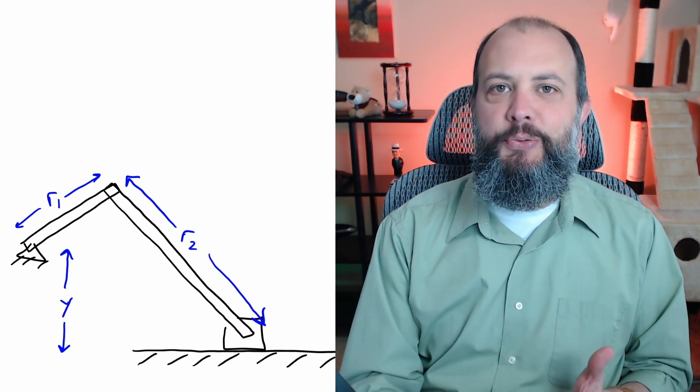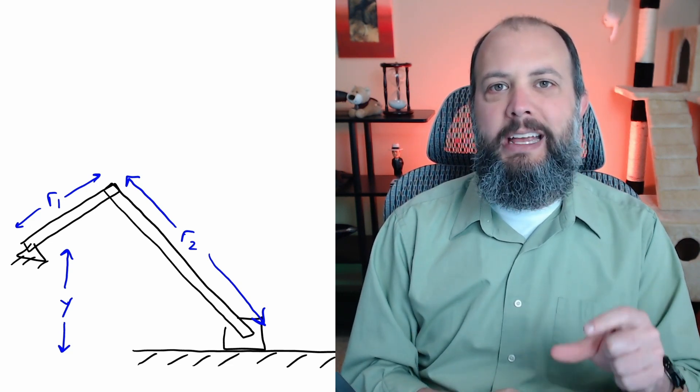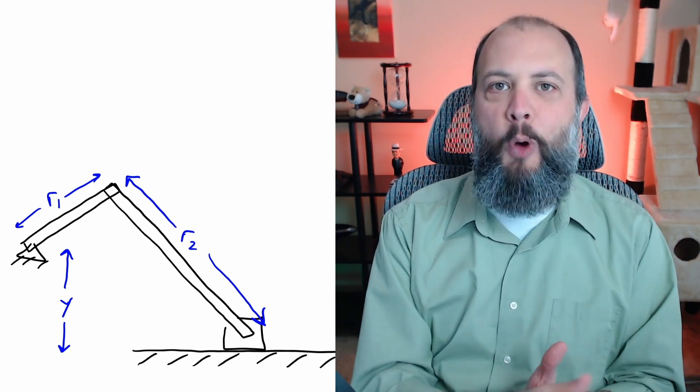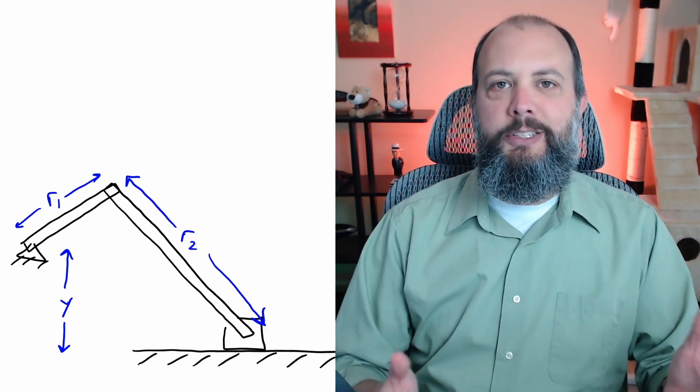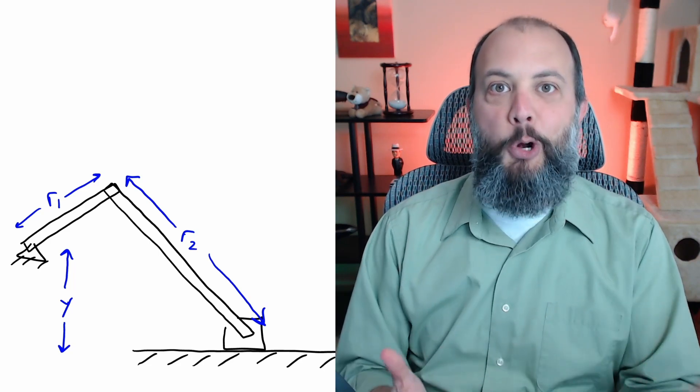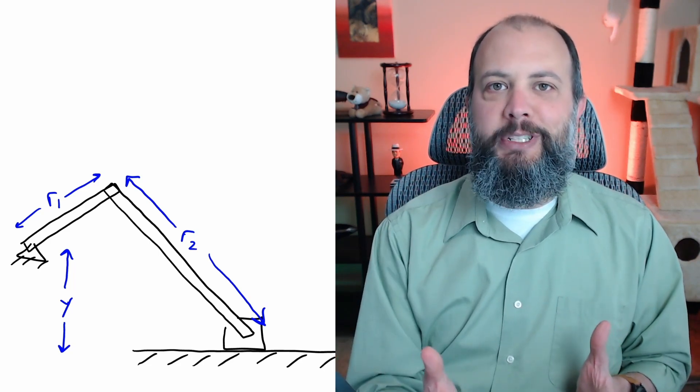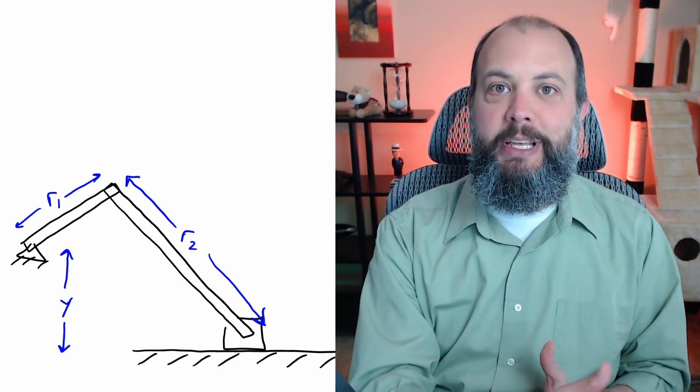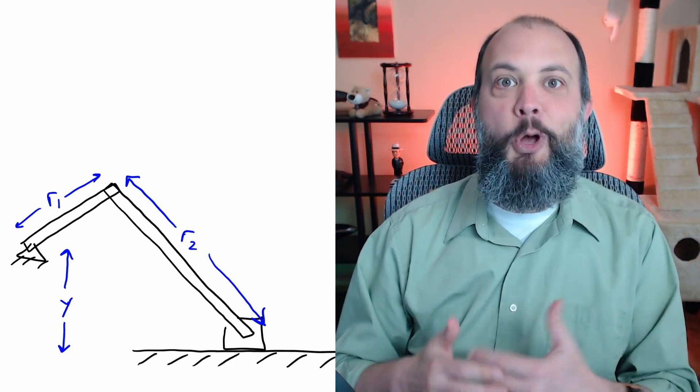By introducing asymmetry to the problem by shifting the crank hub a distance y away from the slider axis, this will result in the push stroke taking more than 180 degrees and therefore longer, and the return stroke will take less than 180 degrees and be faster. Hence the name quick return.